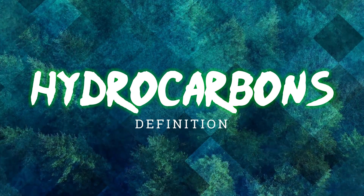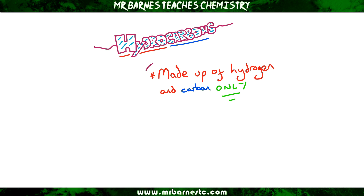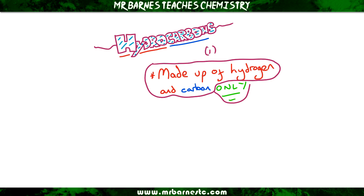Hi guys, welcome to this video looking at what hydrocarbons are. Starting with the definition, a hydrocarbon is something that is made up of hydrogen and carbon only. You can get the hydrogen and carbon part from the name 'hydrocarbon', however it's that second part — only — that you need to include for the second mark. If you don't put 'only' in, you would lose out on a mark in the exam.